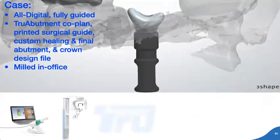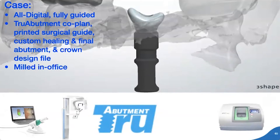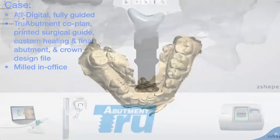If you don't have a 3D printer or milling unit, True Abutment can co-plan the case with you, print the surgical guide, do the custom healing and final abutment and crown design file — and if you don't have a milling unit, you can have them mill it or send it to a lab of your choice. This is a case we did with True Abutment: all digital, fully guided, but True Abutment co-planned it with me. The files work in three-shape software — my files play nice with other software.